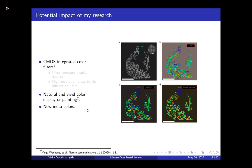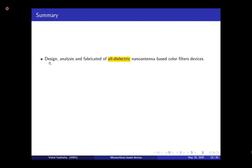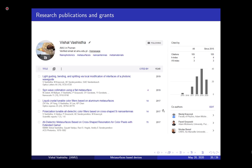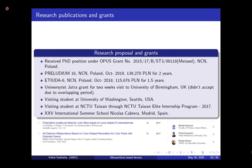Who knows — one day we can create colors that don't even exist in nature, since we now know how to engineer color. We could call them meta colors. In summary, during this thesis I designed, simulated, and fabricated all-dielectric nano antenna-based color filter devices. I also demonstrated polarization-tunable and electrically tunable color filter devices, and proposed a photonic crystal waveguide where the modes can be changed by modifying only the surface properties. I published four to five articles during my PhD, and received grants including Preludium 16, Etiuda 6, and a University Utra program grant.